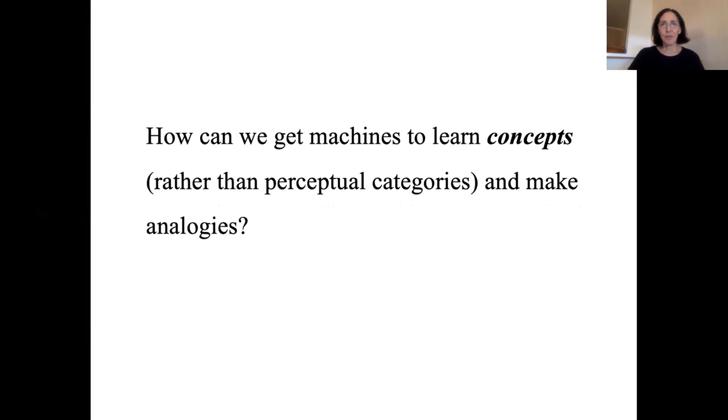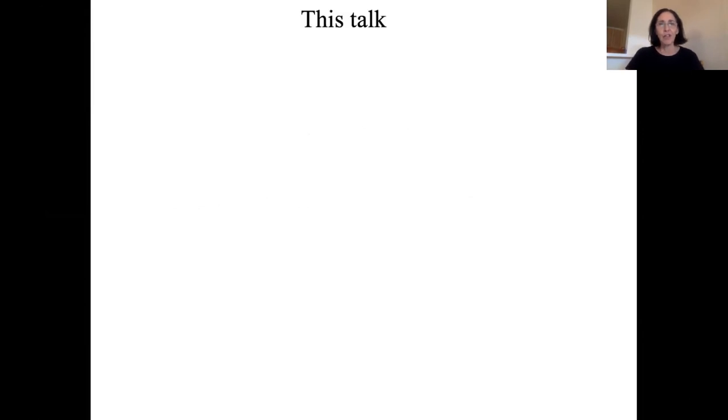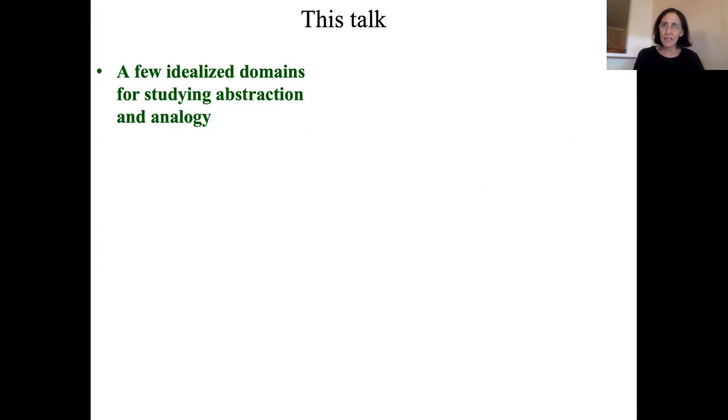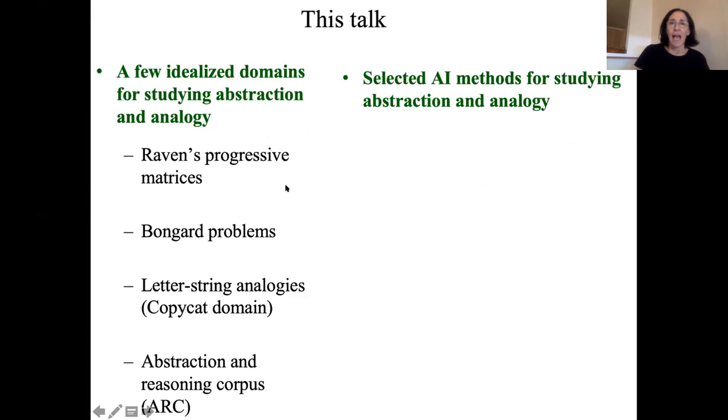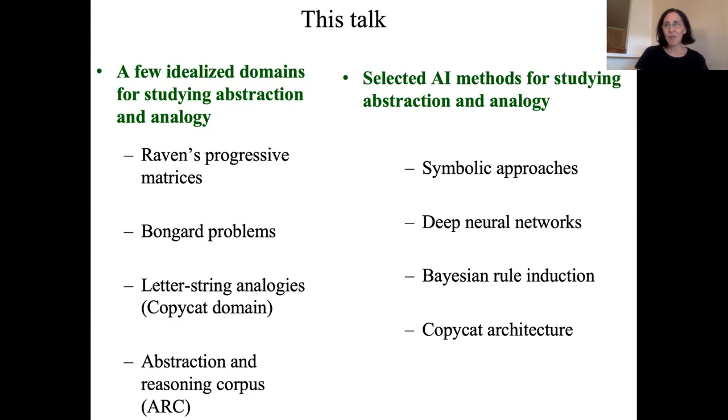That's something that I'm interested in my own research. But I started looking at some of the more recent ways in which people have approached this idea in artificial intelligence, using idealized domains. I'm going to talk about some of these idealized domains, including some popular domains for studying abstraction in humans, as well as machines, and then some selected AI methods. These include symbolic approaches, deep neural networks, Bayesian program induction or rule induction. I'm going to talk a little bit about my own work on copycat, and then ask, what is it we need to do to make progress in this area?